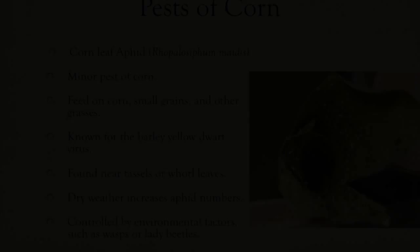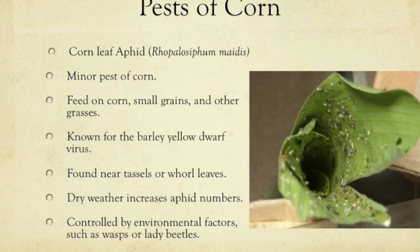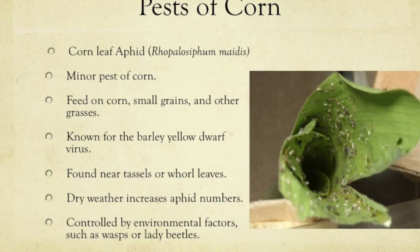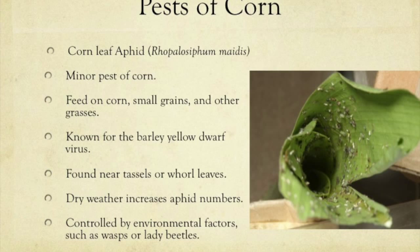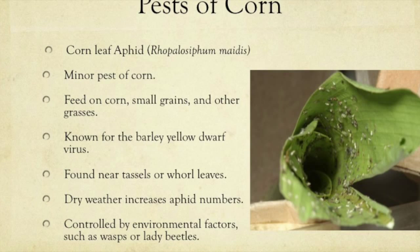Another pest of corn is the corn leaf aphid, known as Rhopalosiphum maidis. It is found throughout the United States and southern Canada and is a native species. Though it is abundant from June to November, all phases of its life cycle are not fully understood. It is a minor pest in field corn grain production but is sometimes of major importance in seed production. Corn leaf aphids feed on sorghum, corn, small grains, and other grasses. Some aphid populations are numerous on small grain seedlings in October and cause reduced yields. They are also known vectors of barley yellow dwarf virus.